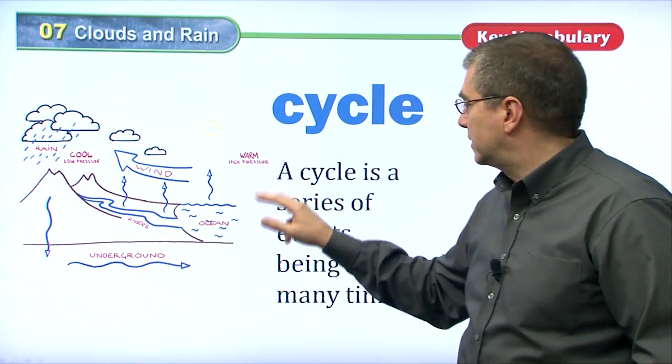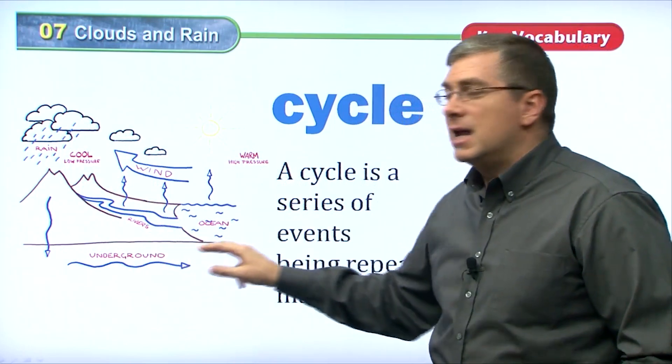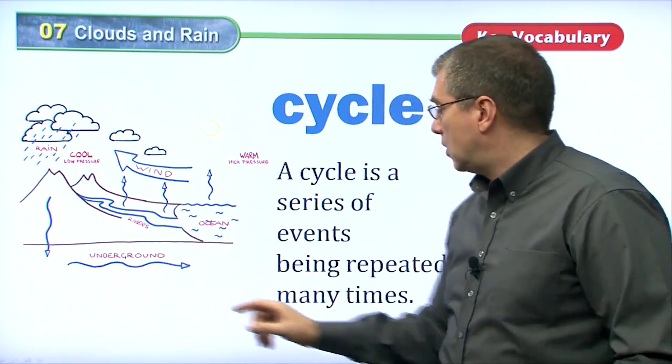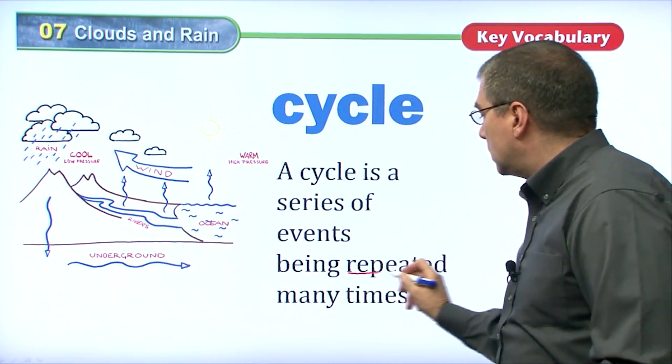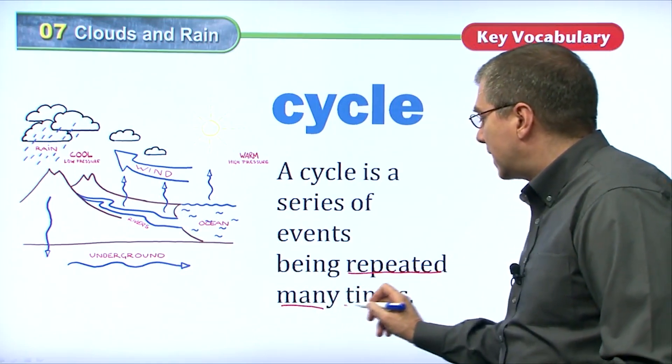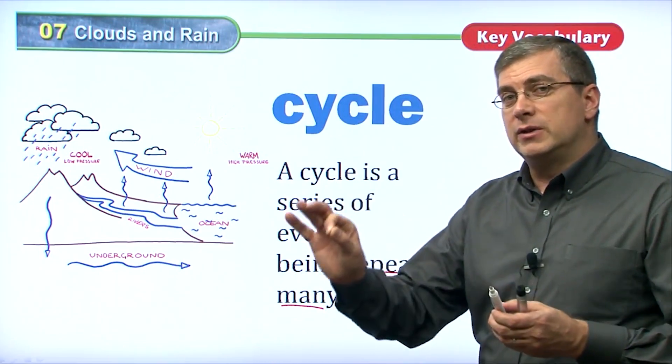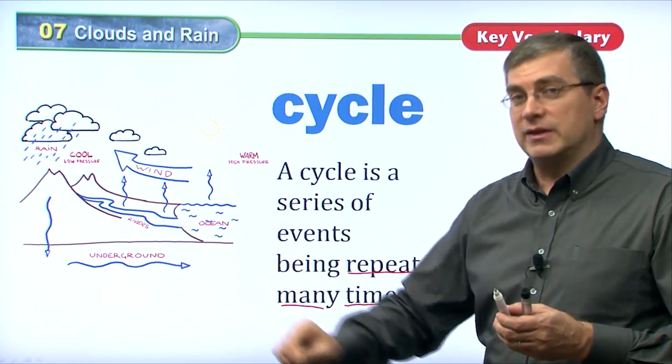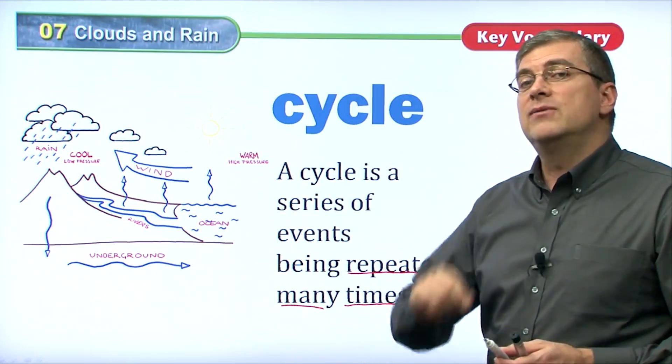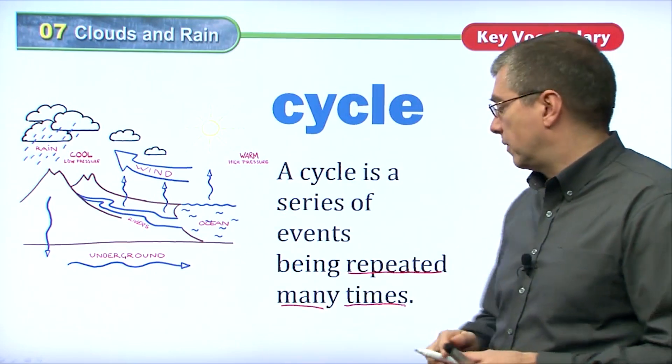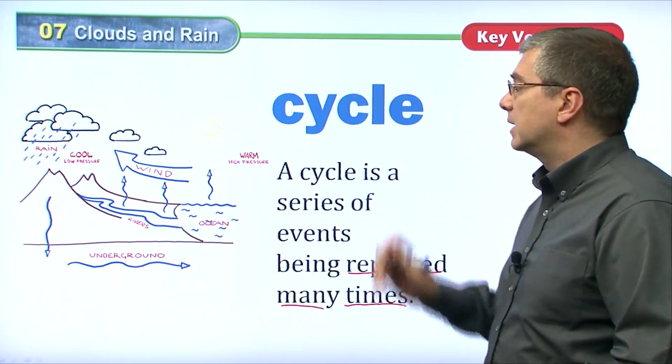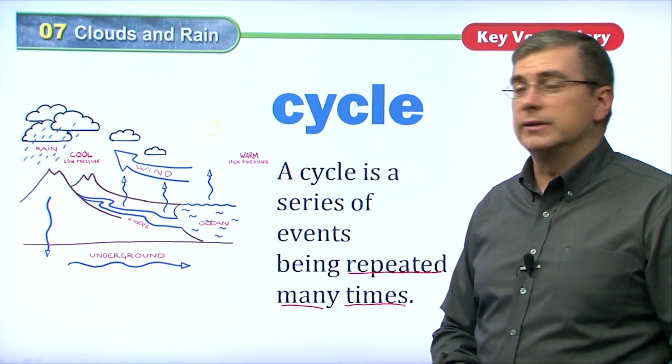A cycle is a process or a series of events that repeats over and over again. It's being repeated many times. Just like the human life cycle, somebody goes from infant to adult, adults have babies, and the cycle starts again. These events happen over and over. They're repeated many times, a series of events. That's what a cycle is.